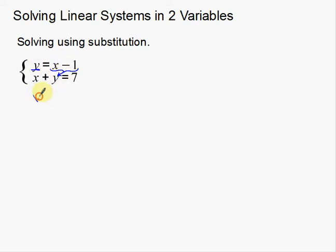This is what it's going to look like: x plus (x minus 1) equals 7. Notice I took out the y and replaced it with x minus 1. That right there is substitution — taking something out and putting something else in that's equivalent.